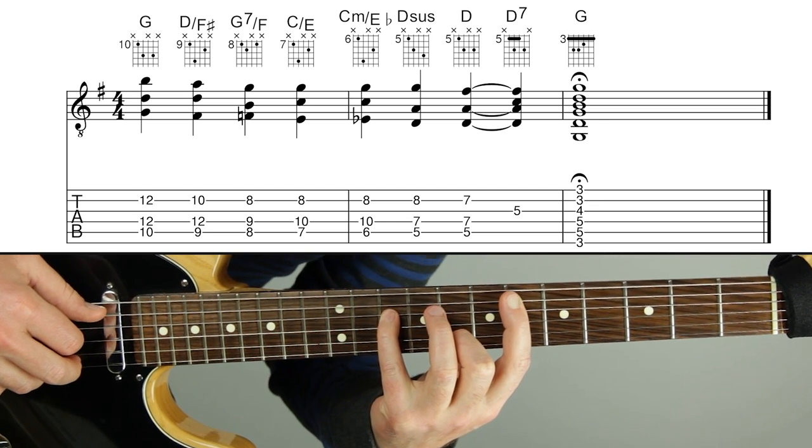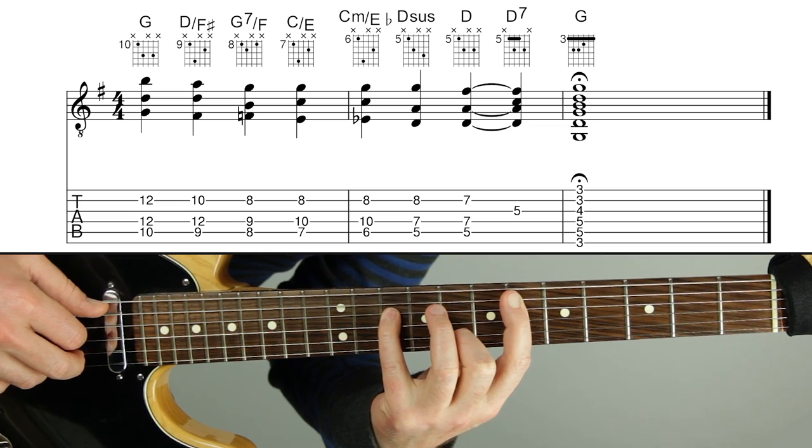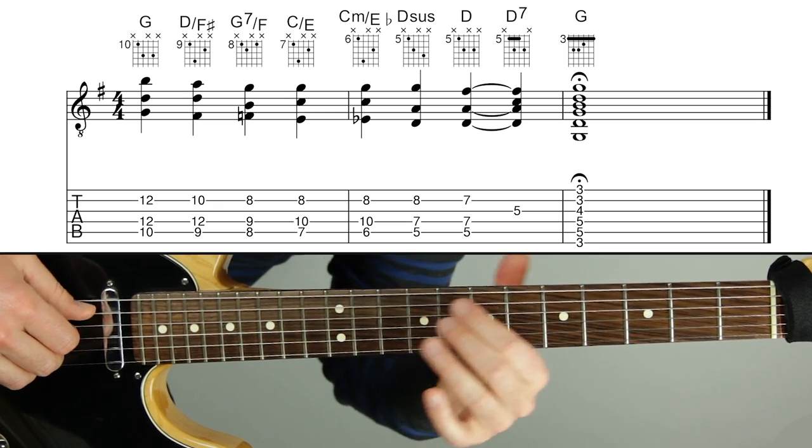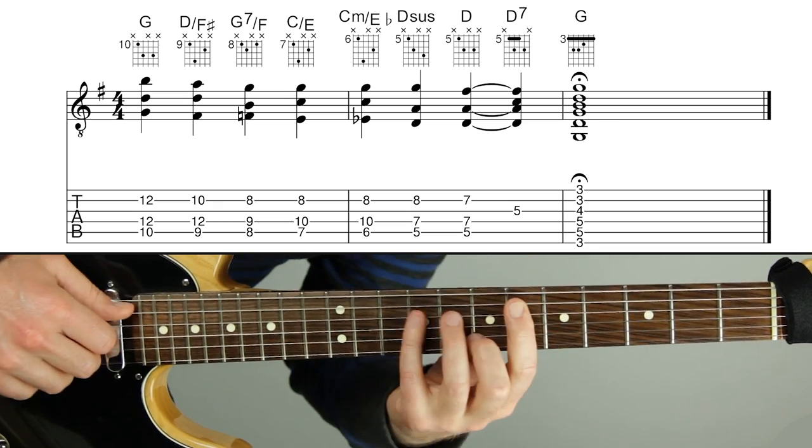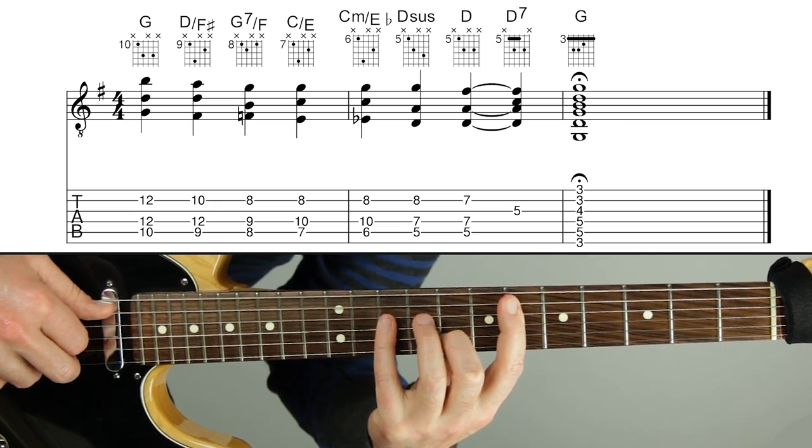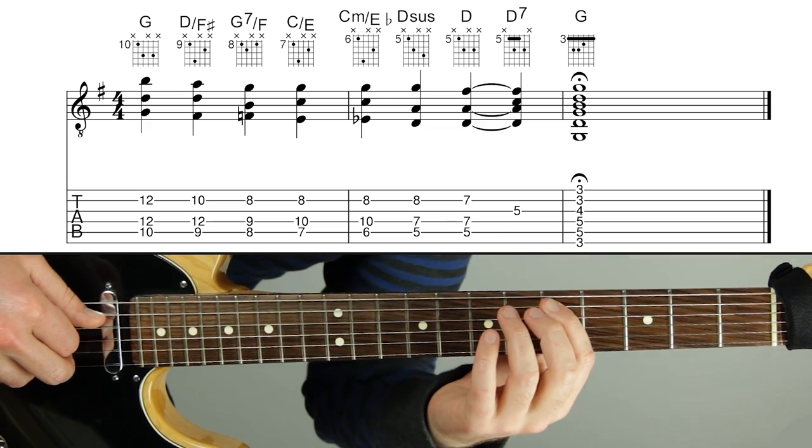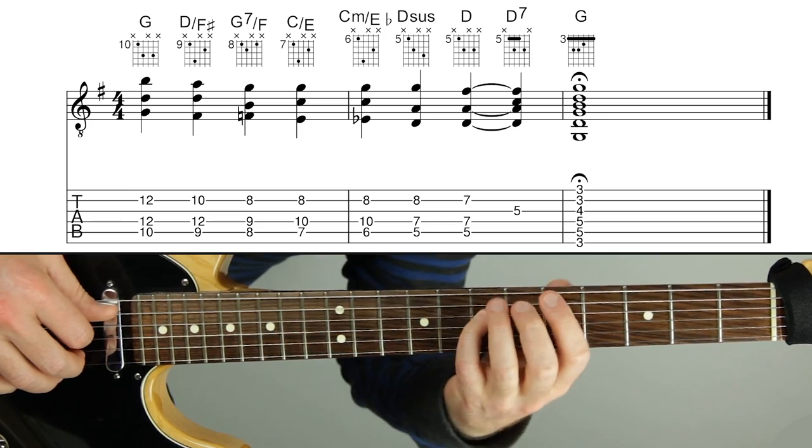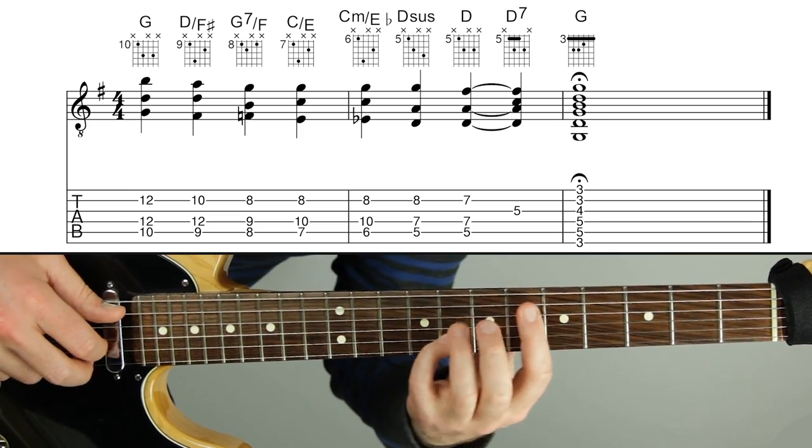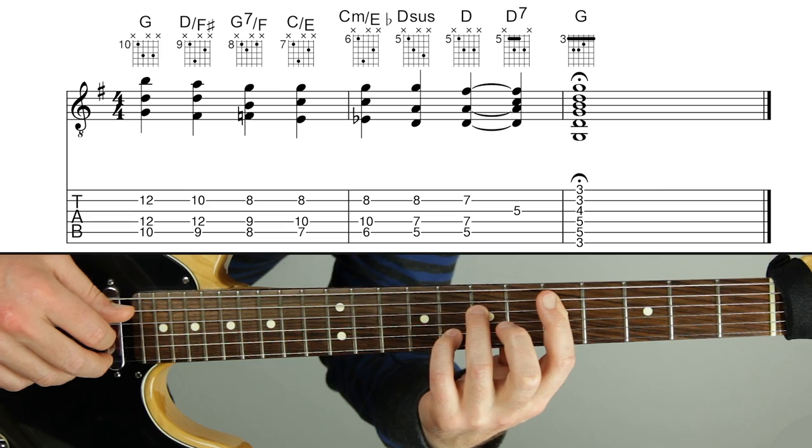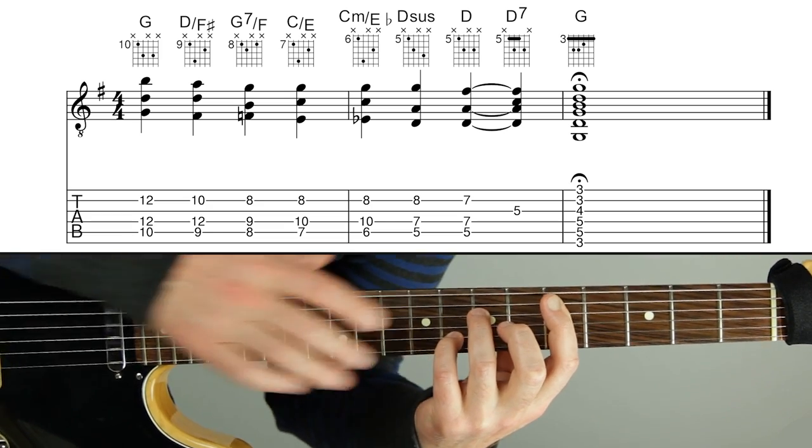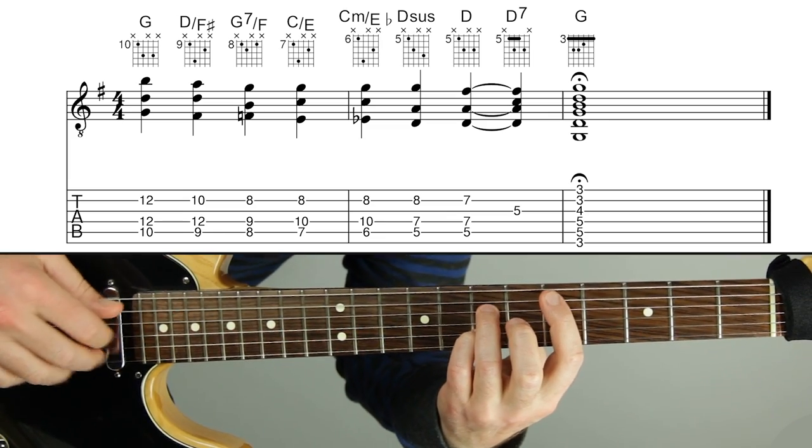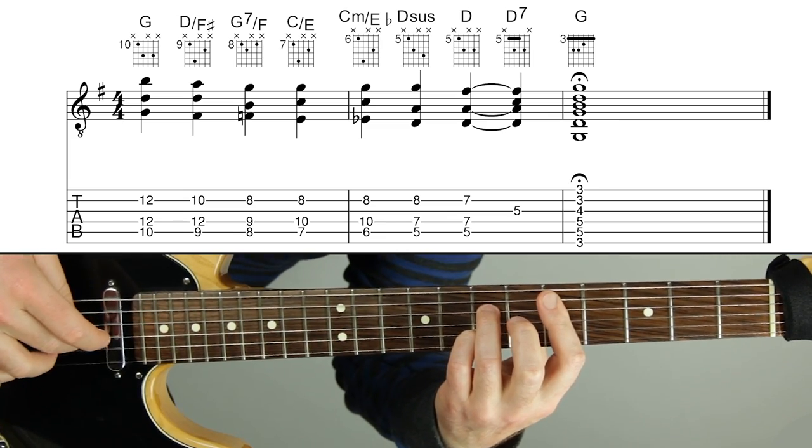The next chord is D sus, D sus four. Notice how the base notes are all moving down by step. It's very cool to have a progression where all of the base notes on the bottom are moving down chromatically like that. So this last note is going to move down to D the root. This note's going to move a minor third down to the fifth of D and this top note is going to stay the same. Then we're going to resolve that top note down to the third of D everything else is going to stay. Because now we're just on D and then I'm just going to add a voice in here.